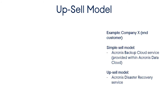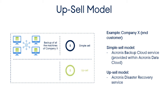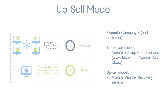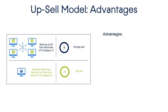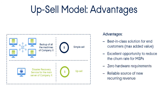In the case of the upsell model, the customer is offered a more sophisticated service that includes the initial basic service. For example, if the basic service offered is the Acronis Data Cloud backup service, then an advanced version could include the initial backup service for the customer's Windows machine, plus the Acronis Data Cloud disaster recovery service for the customer's business-critical applications. The upsell model offers a wide range of business opportunities — it provides best-in-class solutions and maximum added value for the customer, which will reduce the churn rate and improve customer retention. Moreover, it's a reliable source of new recurring revenue. Even novice MSPs and resellers with limited or zero infrastructure can benefit from it, as the Acronis Data Cloud already includes all the top-notch services that can be delivered as a bespoke upsell solution.